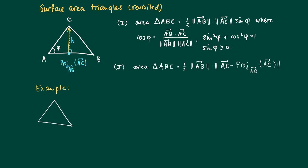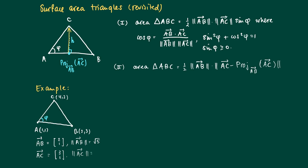For example, take a triangle in R² with points A=(1,1), B=(2,3), C=(4,2). According to procedures 1 and 2, we need some vectors. The vector AB has coordinates (2,1), AC has coordinates (3,1), and their respective lengths: the length of AB is the square root of 5, and the length of AC is the square root of 10, which is the square root of 3² plus 1².